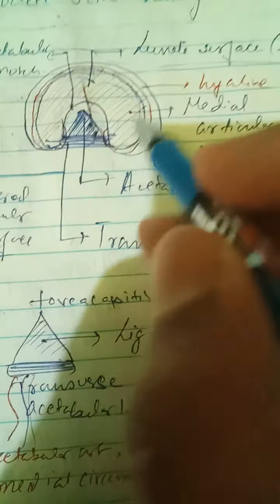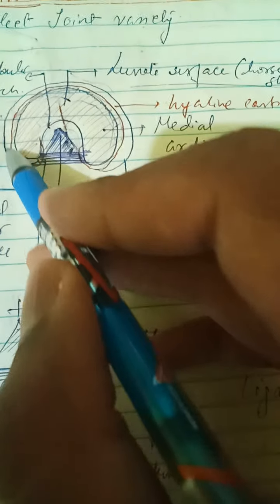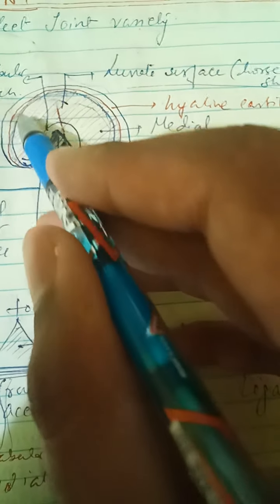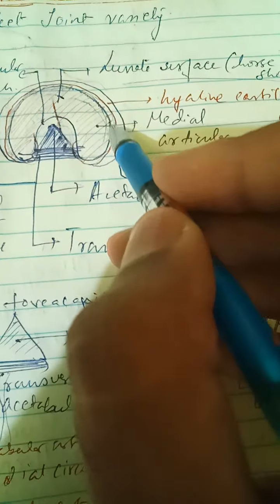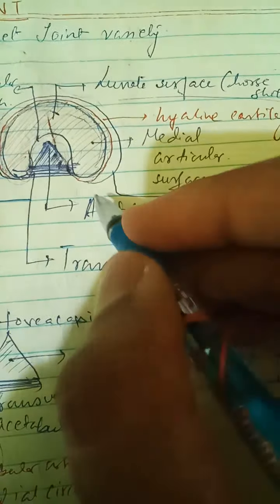There is hyaline cartilage surrounding the acetabular (lunate) surface, except at the acetabular notch and the acetabular fossa. The acetabular labrum completely encloses the acetabular lunate surface along with the acetabular notch and the acetabular fossa.